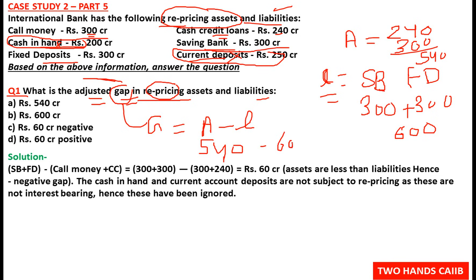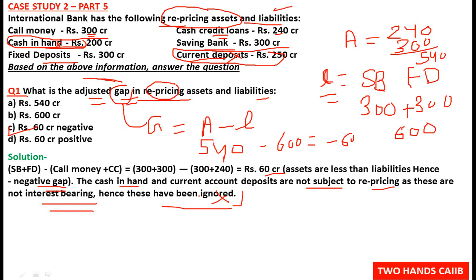The adjusted gap is minus 60, which is a negative gap — option C. Assets are less than liabilities, hence a negative gap. Cash in hand and current accounts are not subject to repricing because they are not interest-bearing instruments, so they have to be ignored in this calculation.